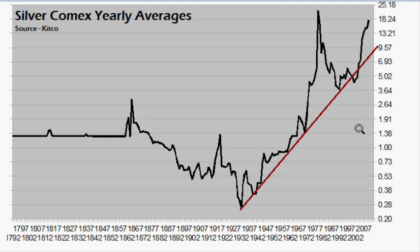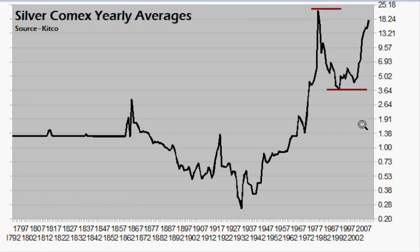Since the 1932 bottom at 25 cents, there has been a massive move. The 1980 yearly average was $21.79, with an intra-year high of $50 an ounce, followed by a fall to $3.79 — a major price correction. So when people talk about silver going to $100, $200, $400, or $500, it's really not that much of a surprise when you look at this logarithmic chart based on percentage moves. Going from a quarter to $20 an ounce is already quite massive.